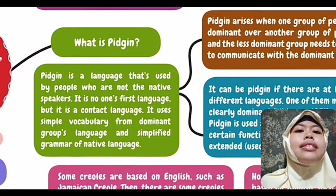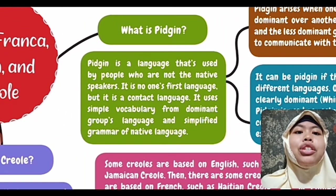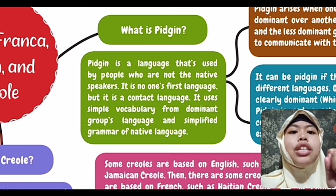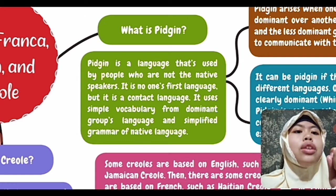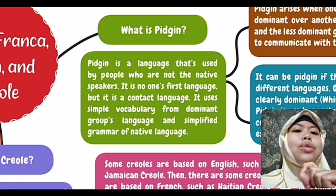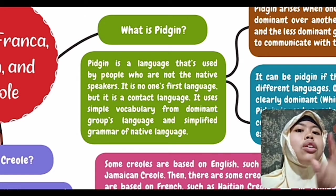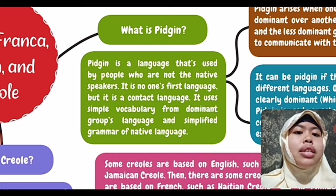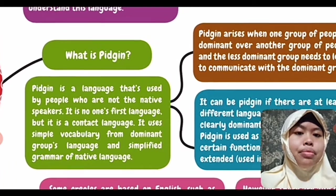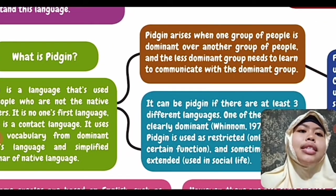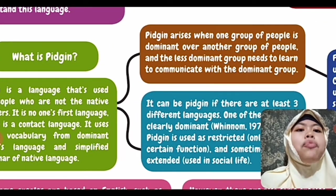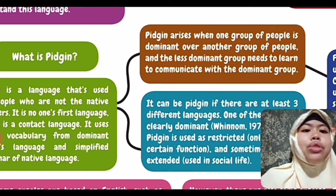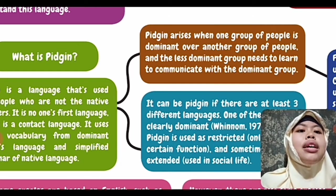Next, we will talk about Pidgin. What is Pidgin? Pidgin is a language that is used by people who are not native speakers — it is no one's first language, but it is a contact language. It uses simple vocabulary from the dominant group's language and a simplified grammar of the native language. Pidgin arises when one group of people is dominant over another, and the less dominant group needs to learn to communicate with the dominant group.